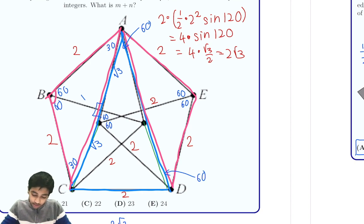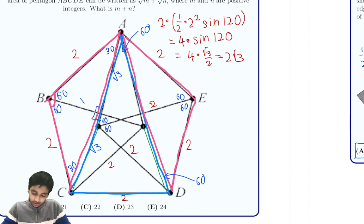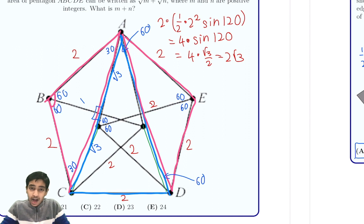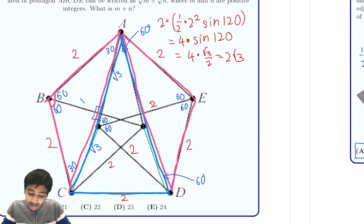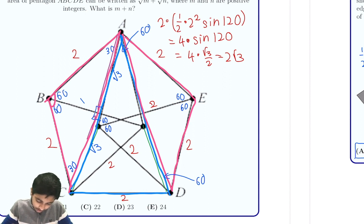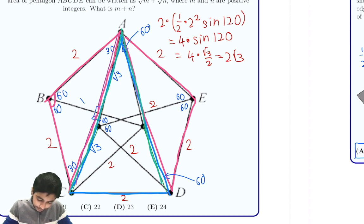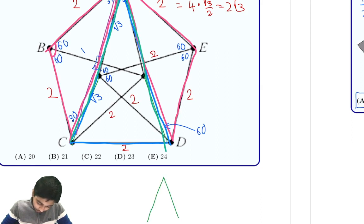Now the real hard part is finding the area of the middle triangle, ACD. We know the base is 2. To find the area, we need either the height or all three side lengths. The height seems hard to find directly, but we can find the side lengths. We can see that the side AC is √3 + √3 = 2√3, and the same applies to the other side. So we have a triangle with two side lengths of 2√3 and a base of 2.